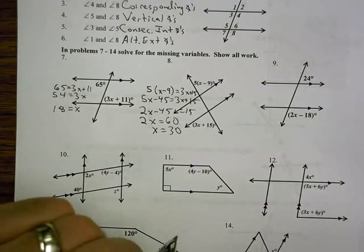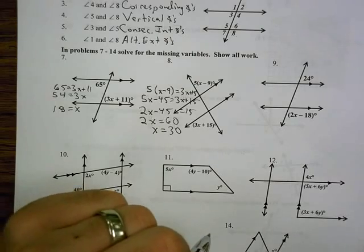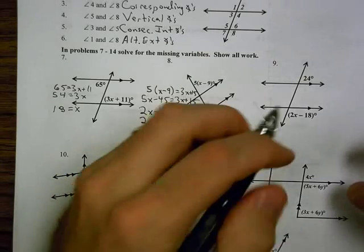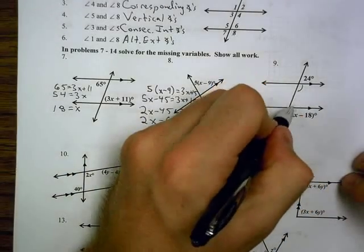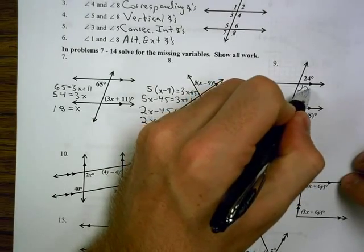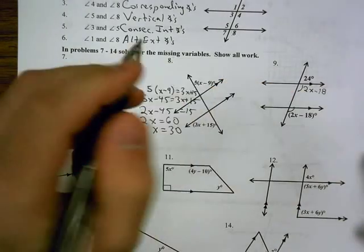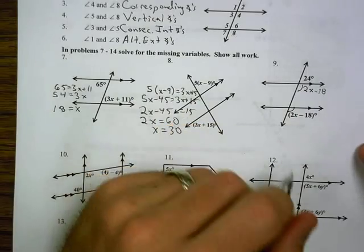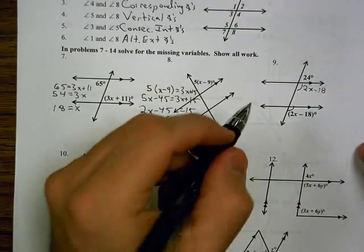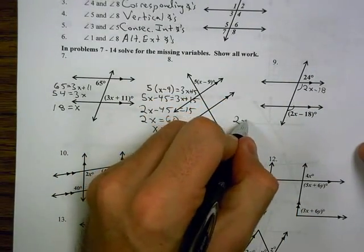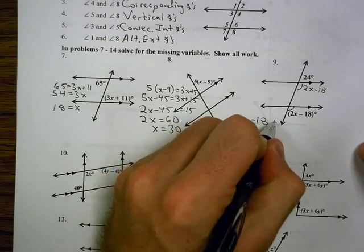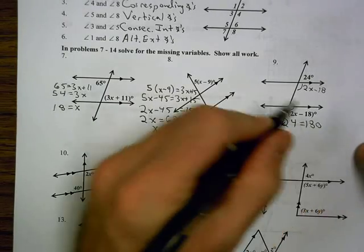On number 9, I look at these angles, and these are actually none of the certain angle pairs that I have. But if I look at the corresponding angles here, I can make this 2x minus 18. With that being the case, it makes them a linear pair, so they are supplementary.